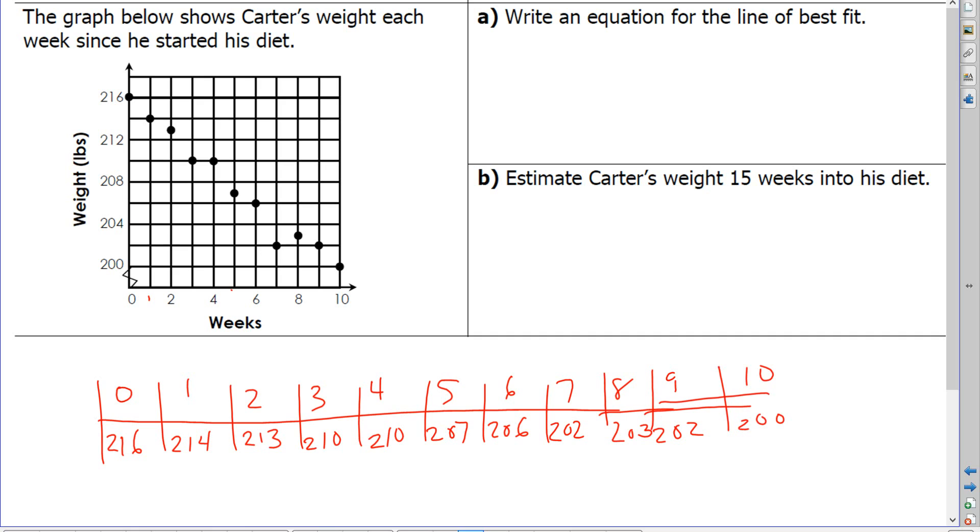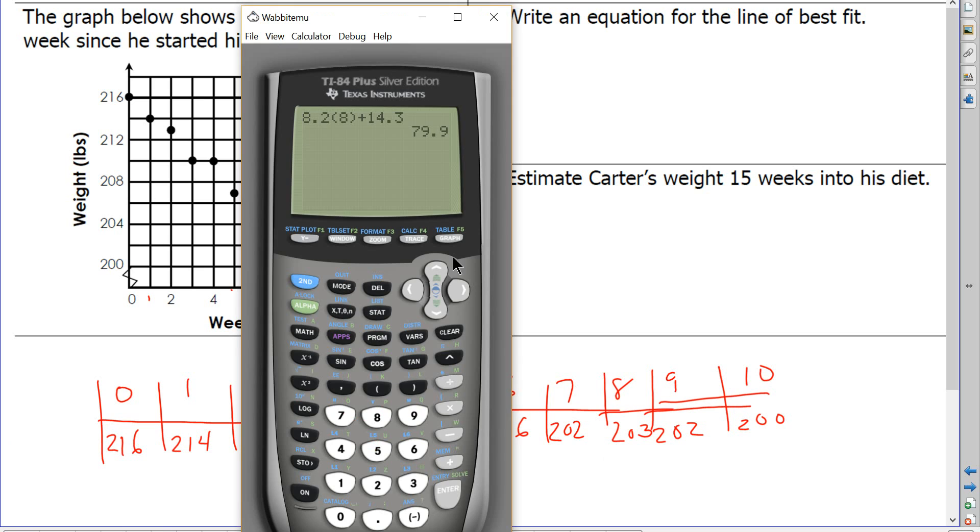So I just quickly wrote them down in a side-facing table here, because of the way my screen is. And then you would go and clear your list. So stat, clear list, clear list L1, comma, L2.